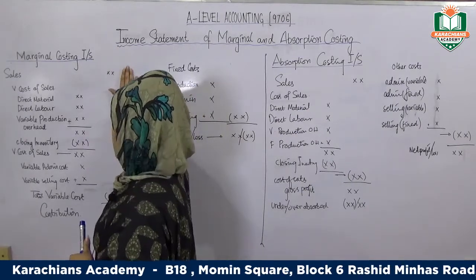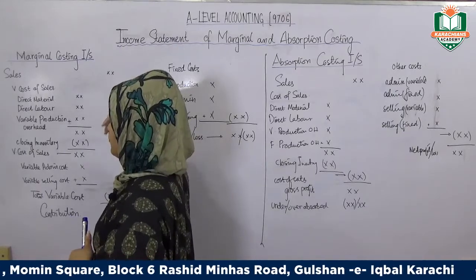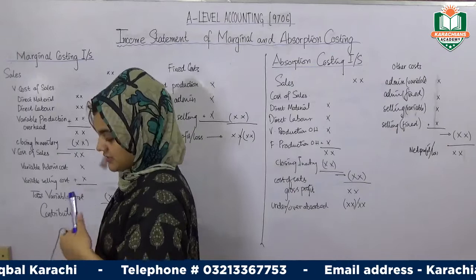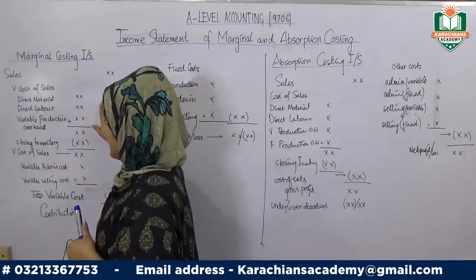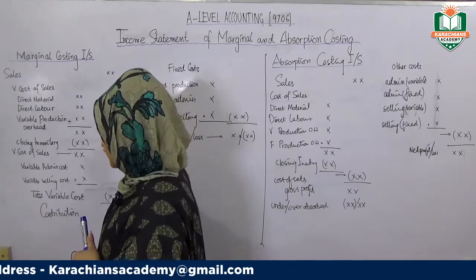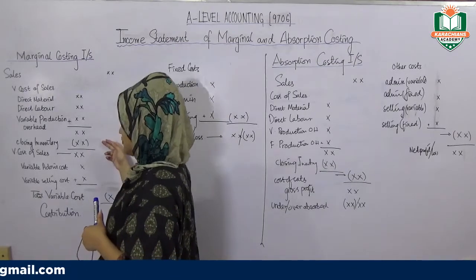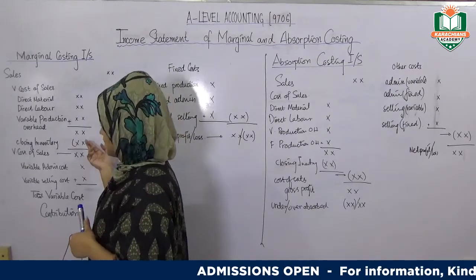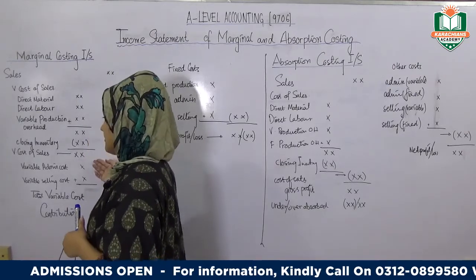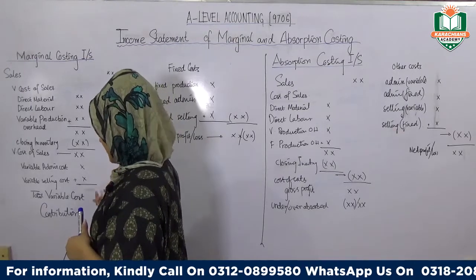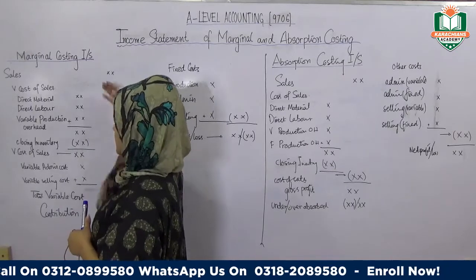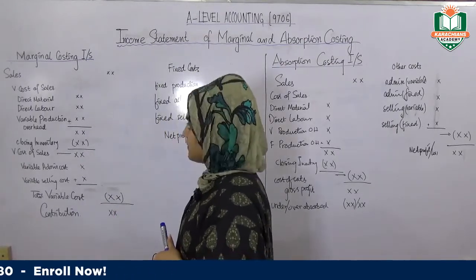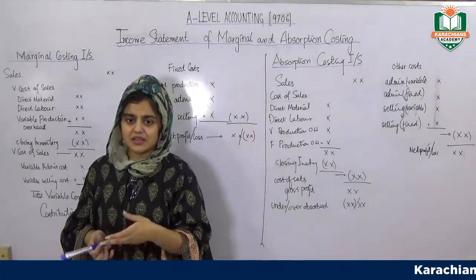First of all, you need to have the format of the income statement: you have sales, and then in another column your cost of sales. The cost of sales includes materials, labour, and then you subtract all your cost of sales and all the expenses. This is the basic income statement format.